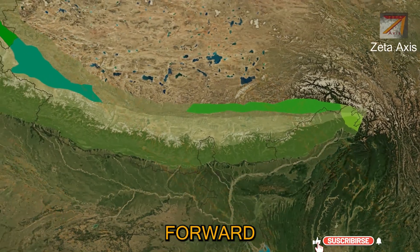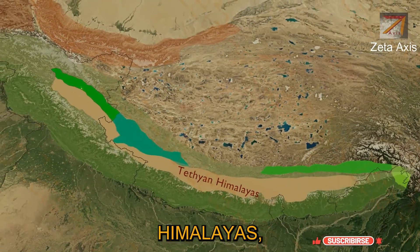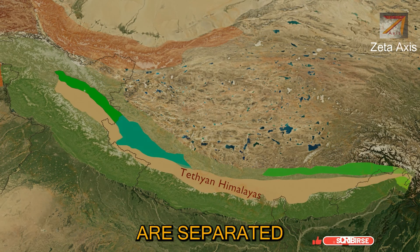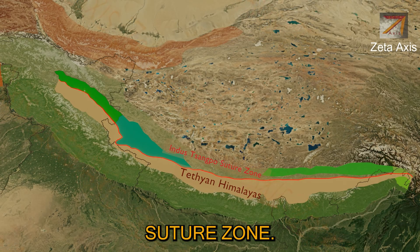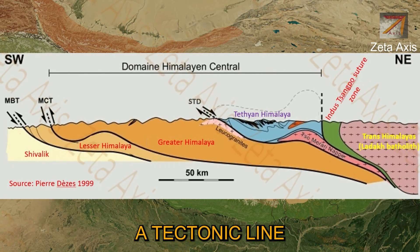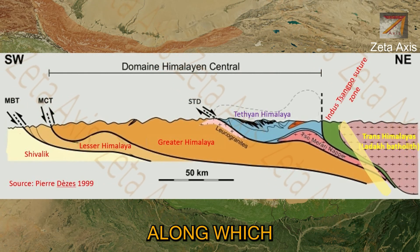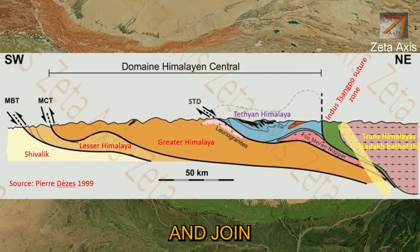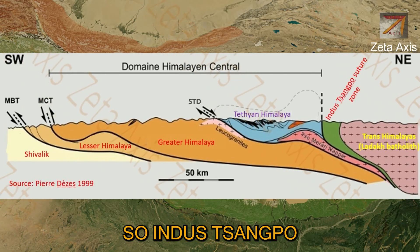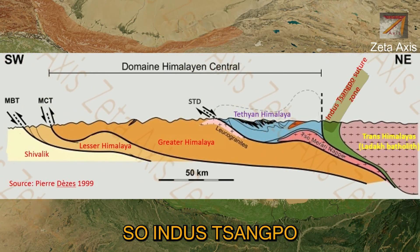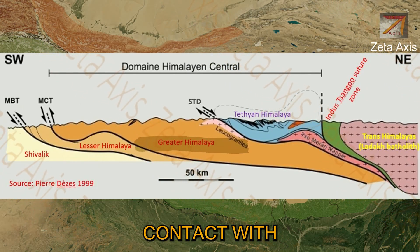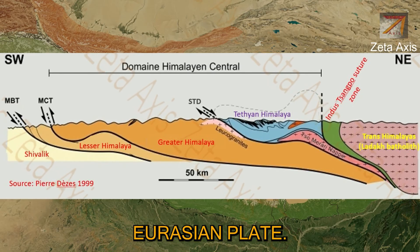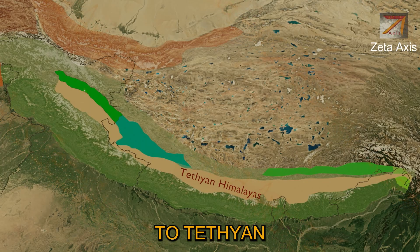Moving forward to Tethian Himalayas, they are separated from Trans-Himalayas by the Indus Suture Zone. The suture zone is basically a tectonic line along which two continental plates collide and join with each other. So the Indus-Tsangpo Suture Zone is the region where the Indian plate comes in contact with the Eurasian plate.